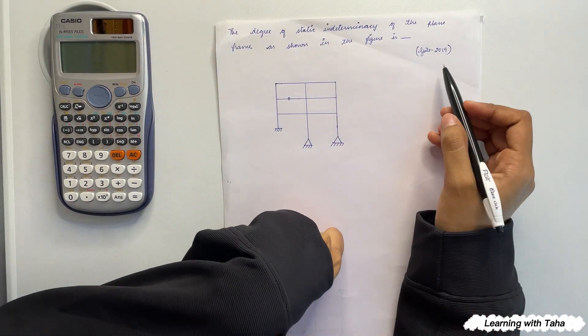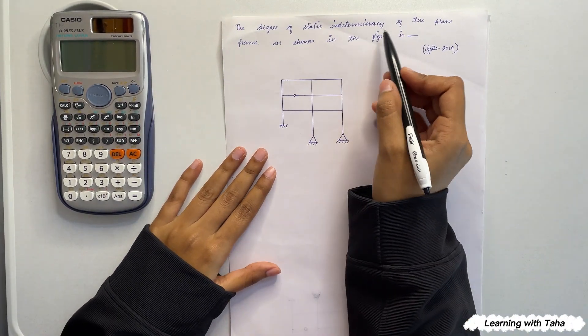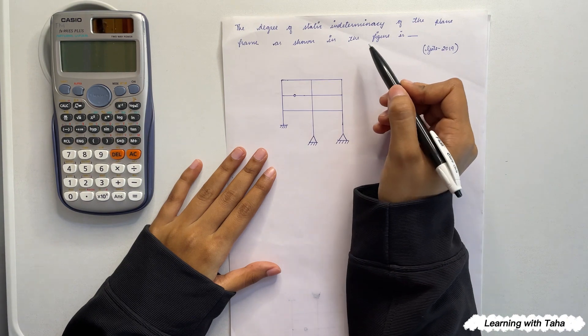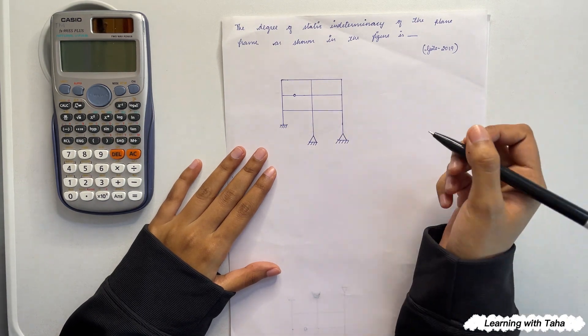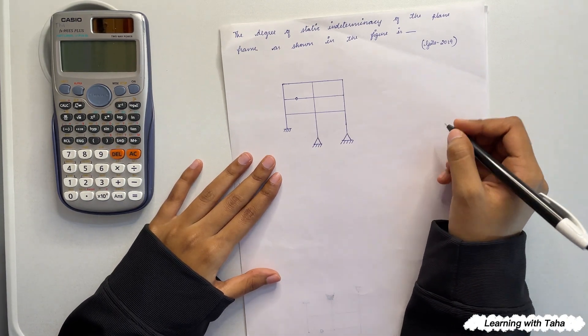This question is from GATE 2019. The degree of static indeterminacy of the plane frame as shown in the figure is—so first of all, let us know what is static indeterminacy.